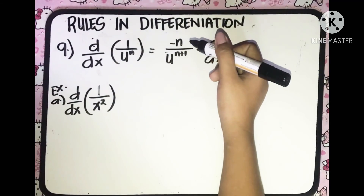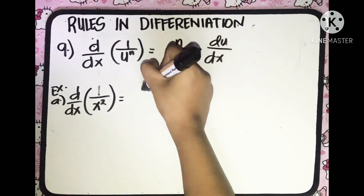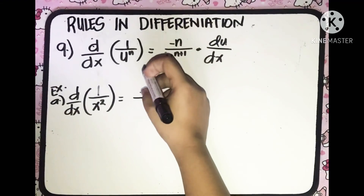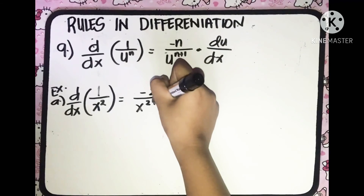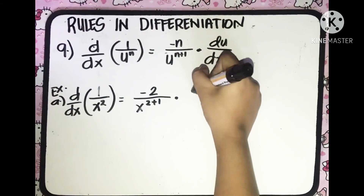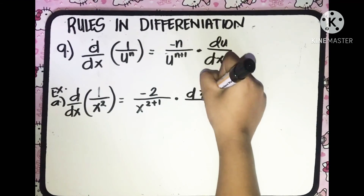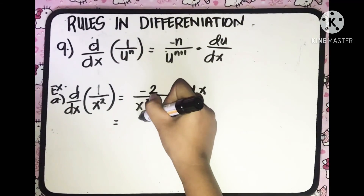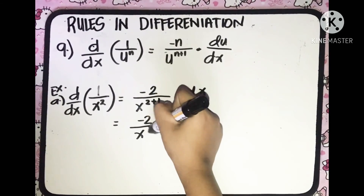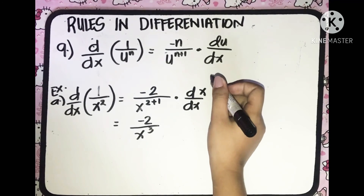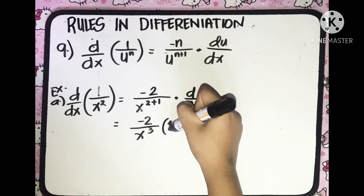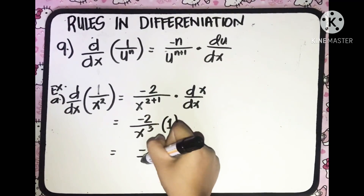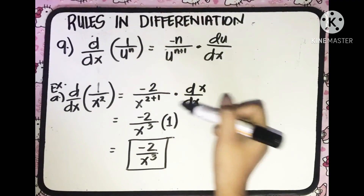Proceeding and following the rule, we'll have negative n, which is equal to negative 2, all over u raised to (n plus 1), which is x raised to (2 plus 1), and then multiplied to the derivative of u, which is x with respect to x. Let's simplify: we'll have negative 2 over x cubed, multiplied to the derivative of x with respect to x, which is equal to 1. So multiplying by 1, we'll have negative 2 over x cubed. And that is the derivative of the given function.